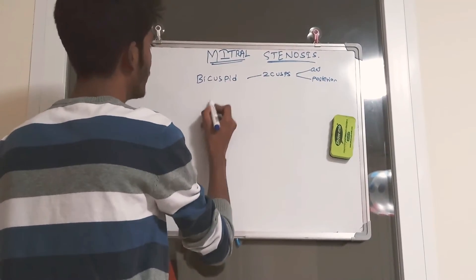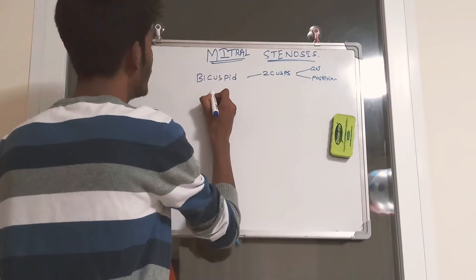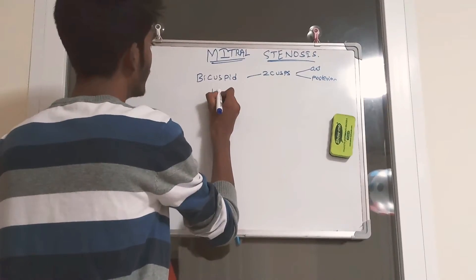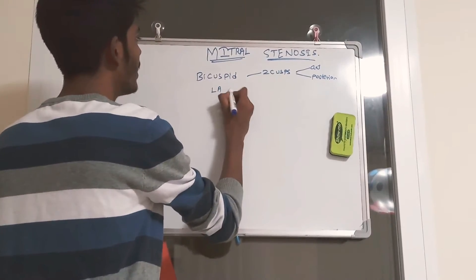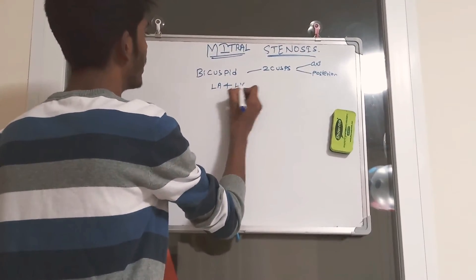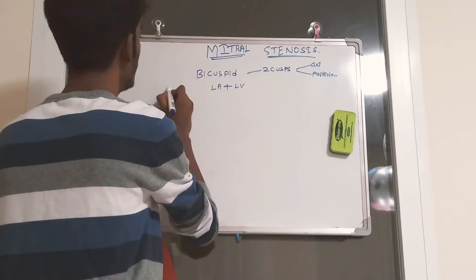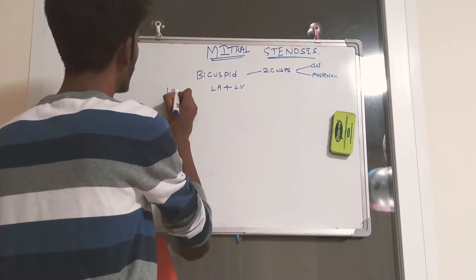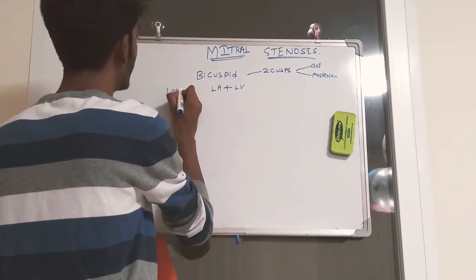We should know the location of the mitral valve. It is located between the left atria and the left ventricle. That is the location of the mitral valve.